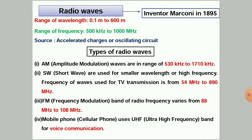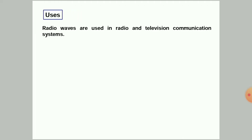Radio waves can be generated using accelerated charges or an oscillating circuit. There are different types of radio waves. First, AM waves — amplitude modulation — in the range of 530 kilohertz to 1710 kilohertz. Second, short wave (SW) waves used for smaller wavelength or high frequency. Frequency used for TV transmissions ranges from 54 megahertz to 890 megahertz. Third, FM — frequency modulation — band varies from 88 megahertz to 108 megahertz. Fourth, mobile or cellular phones use UHF, that is ultra high frequency band, for voice communications.